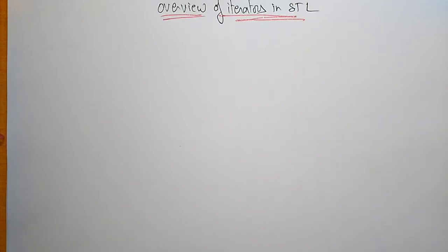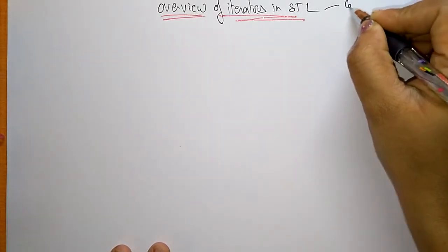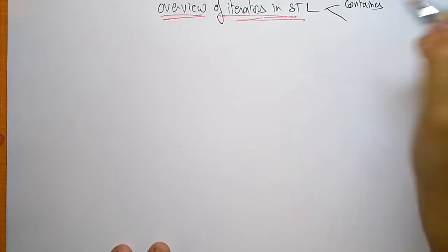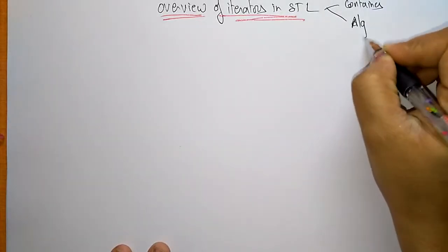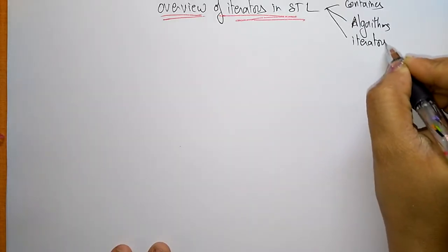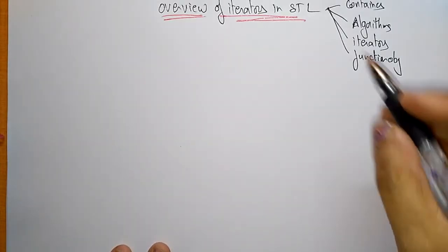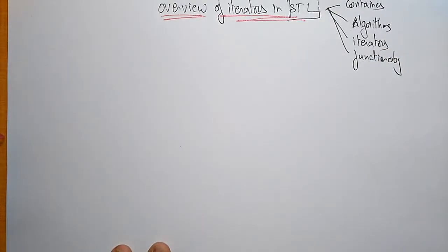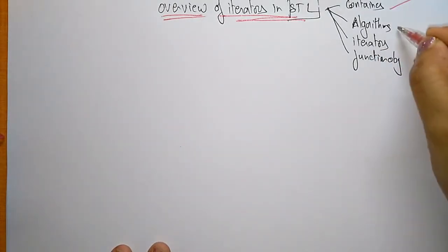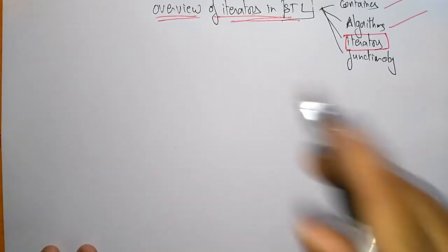Coming to the next topic: iterators in the Standard Template Library. I already explained about the different components present in STL — containers, algorithms, iterators, and function objects. These are the four components present in the Standard Template Library. We already discussed containers and algorithms; now let us see what iterators are.